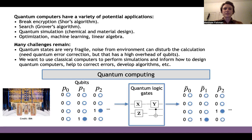However, there are many challenges that remain with building quantum computers. For example, quantum states are very fragile, so noise from the environment can disturb the calculation, and they have to be run at very low temperatures. Ultimately, to make large-scale quantum computers, we need to use quantum error correction, but this has a high overhead in qubits. So for now, we want to use classical computers to perform simulations and inform us on how to design quantum computers, help correct errors, and develop algorithms.